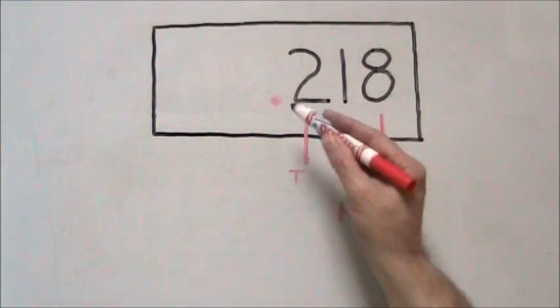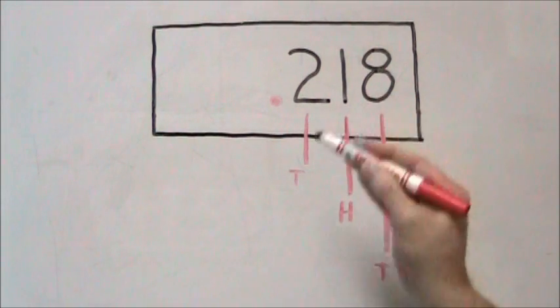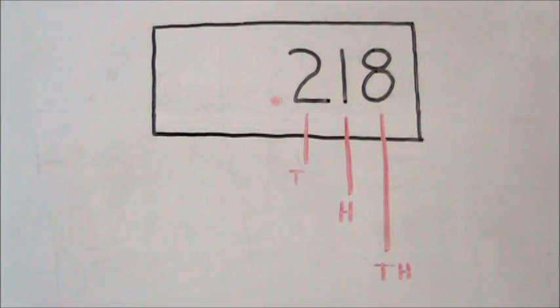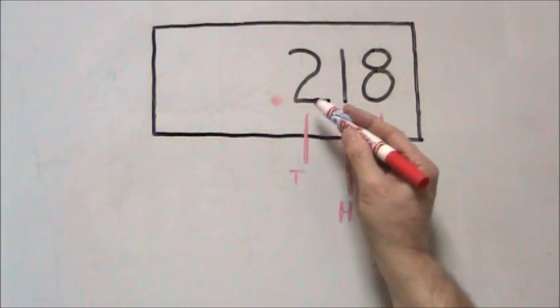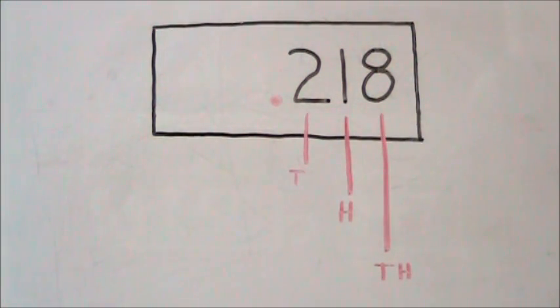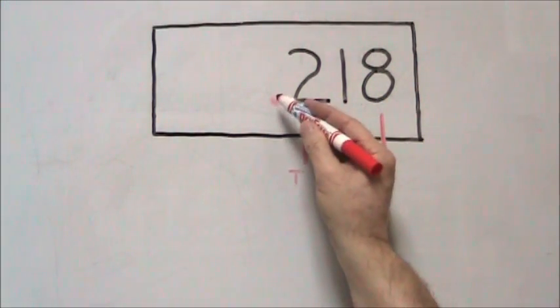Now, if we take the 43 away, we're left with 0.218 or 218 thousandths. So this decimal number has a value less than 1 because there is no whole number to the left of the decimal point.